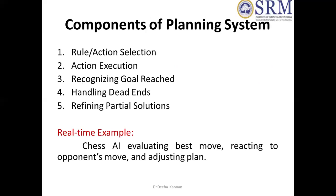The components of a planning system include: first, selecting the actions — what actions are preferable in the present situation. Once an action is selected, we execute it. After execution, we verify whether the goal is reached. Sometimes there will be a dead end — when that happens, we have to backtrack and try the alternate path. And when the solution is partial, we check the remaining possibilities. These are all the components involved in the planning system.